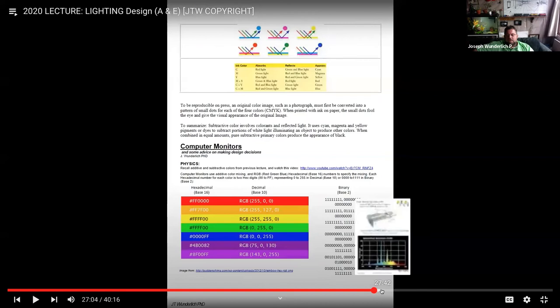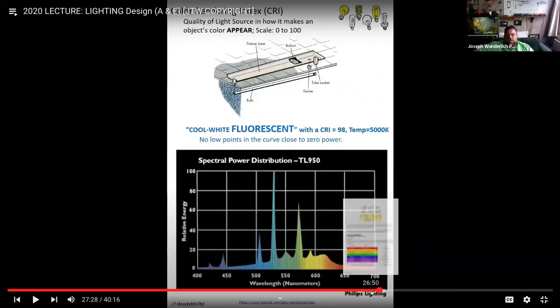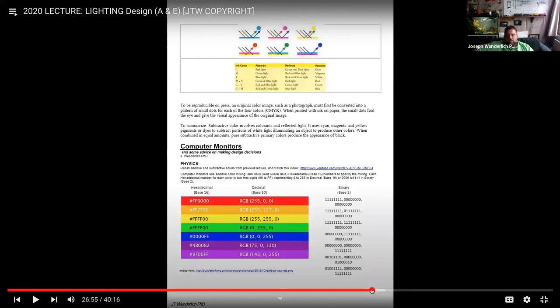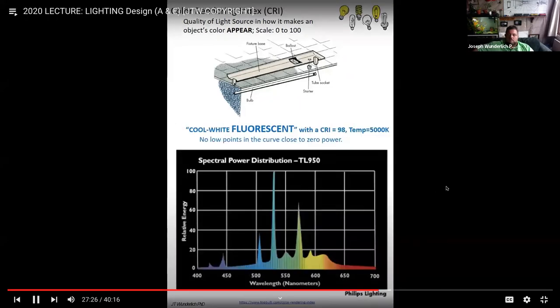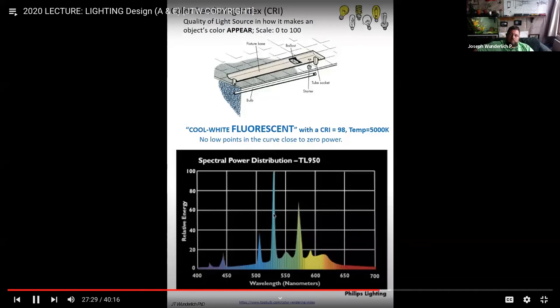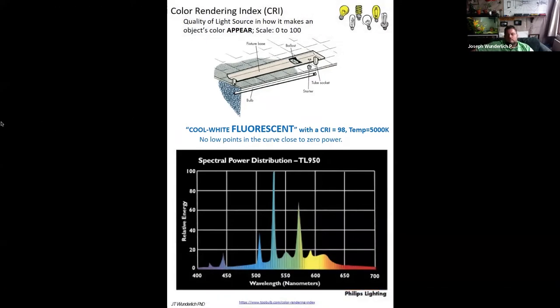Before we get into the color rendering index, we should learn a little bit about additive and subtractive color. I'm going to skip over this because this is going to be part of your next lecture with monitors. This talking about electromagnetic spectrum and additive and subtractive colors. Computer monitors is actually the next lecture coming up too.